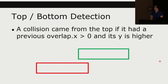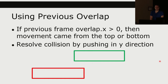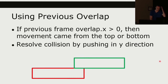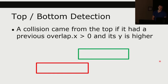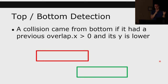This tells you if it's an x or y collision, but not top or bottom. Top or bottom detection: a collision came from the top if the previous overlap had x greater than 0, and the y value is higher (meaning less in our case). A collision came from the bottom if the previous x overlap was greater than 0 and its y is lower. Similarly, left and right detection: if the x is less than, it came from the left; if x is greater than, it came from the right.